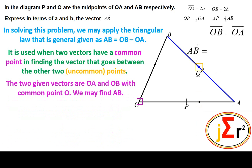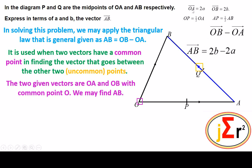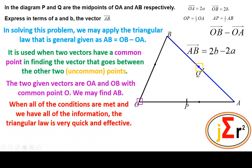The two given vectors are OA and OB. OA is 2A and OB is equal to 2B. It is not difficult for us to place those two representations in this expression. The two given vectors are OA and OB with common point O. We may go straight ahead and find AB. OB minus OA — OB is 2B, minus OA which is 2A. That is all there is to it. When all of the conditions are met, the triangular law is very quick and effective, as we have just seen.